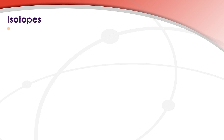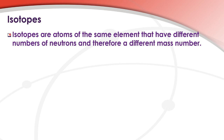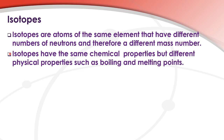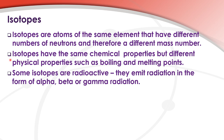Isotopes. Let's start with the definition of an isotope. Isotopes are atoms of the same element that have different numbers of neutrons and therefore a different mass number. Isotopes have the same chemical properties but different physical properties such as boiling and melting points.